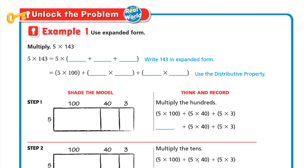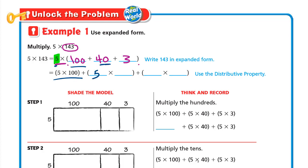First, we will write the expanded form of 143. So 5 times 143 — we write 5 multiplied by, then open two parentheses, and inside them we write the expanded form of 143: 100 plus 40 plus 3. Now we will multiply the 5 by each number inside the parentheses: 5 times 100, then 5 times 40, then 5 times 3.